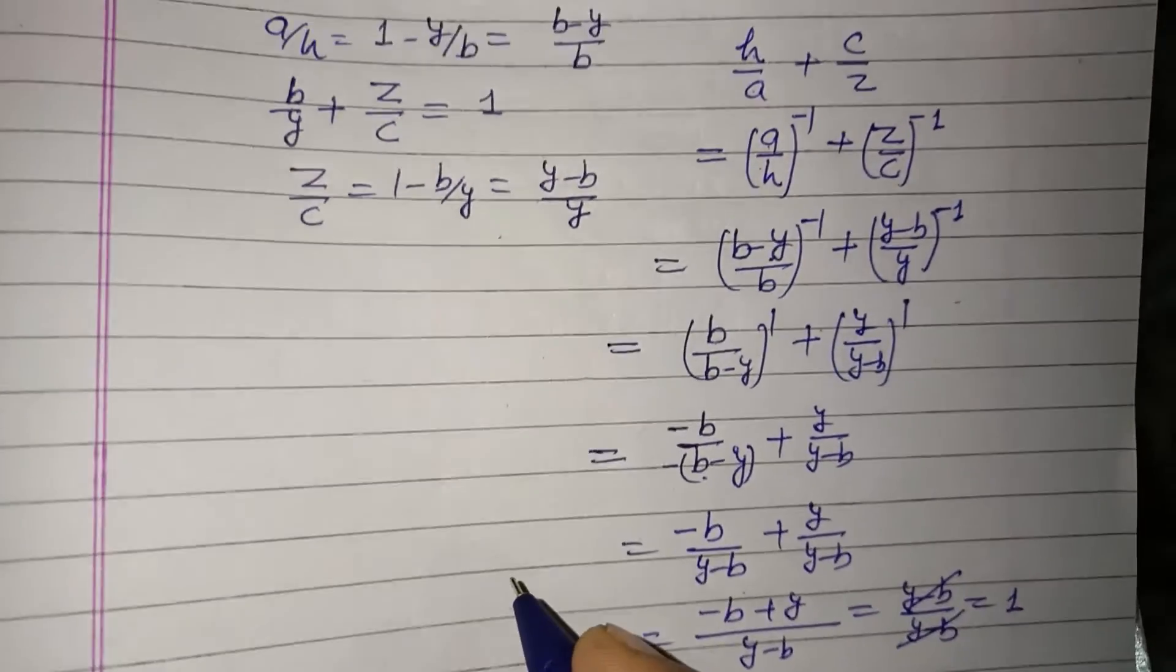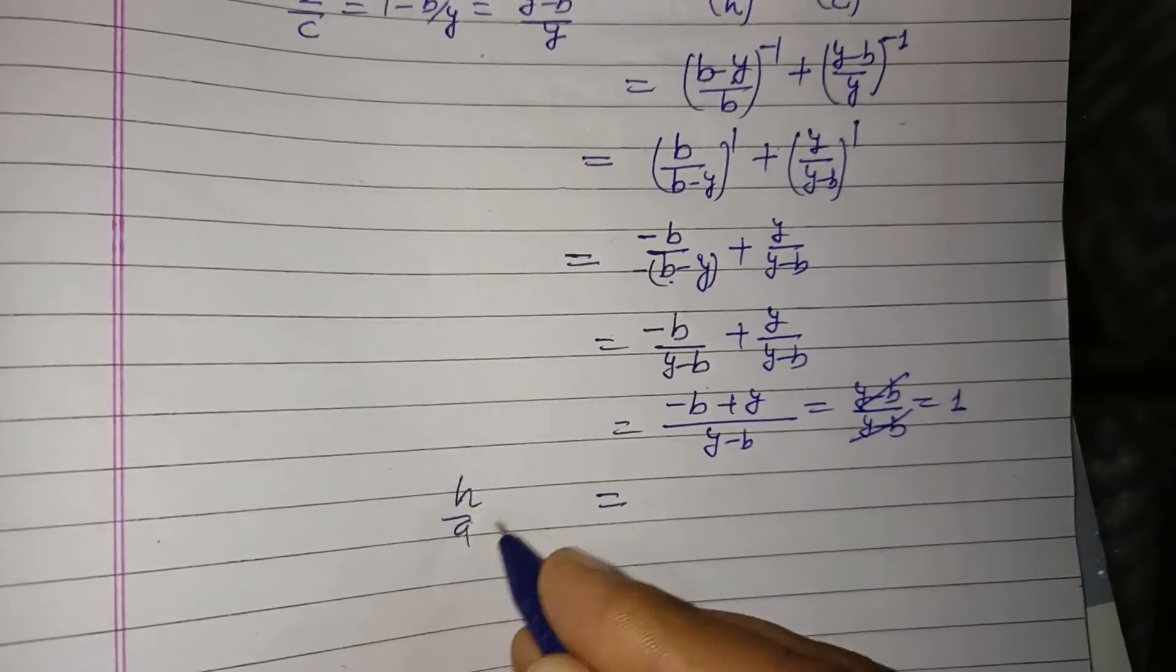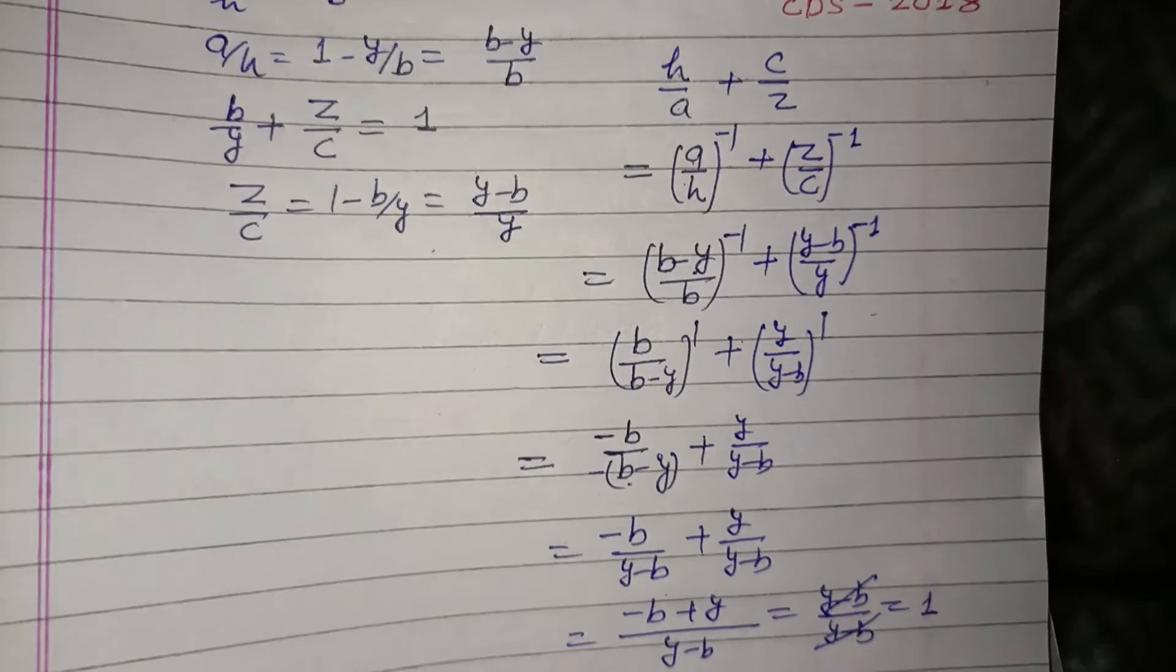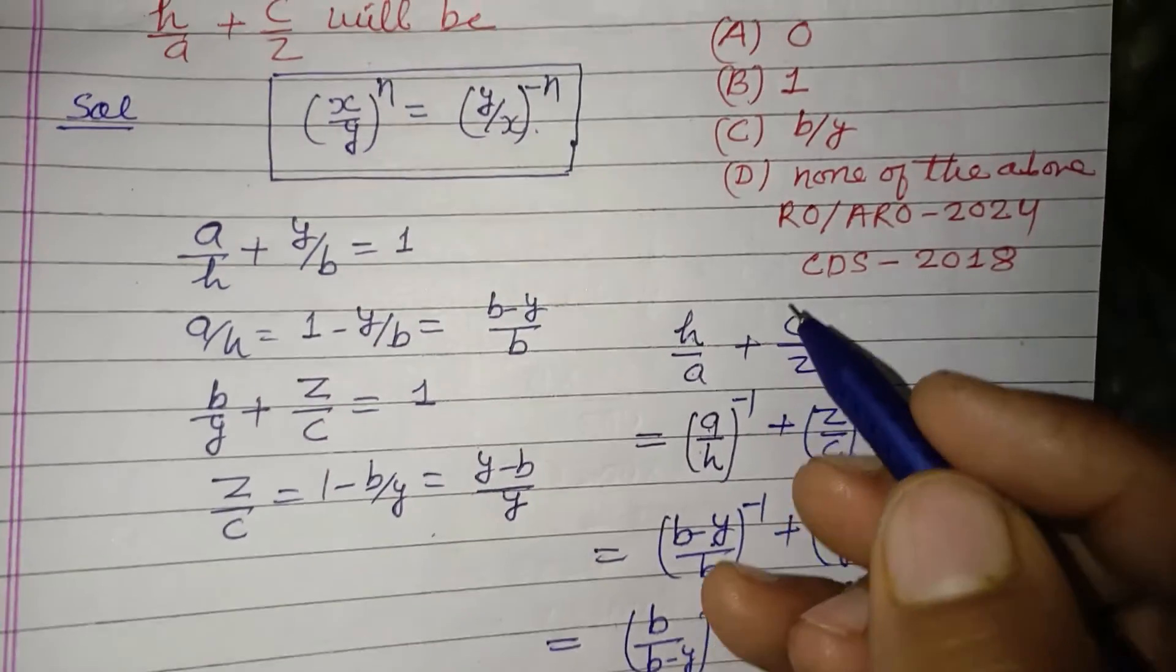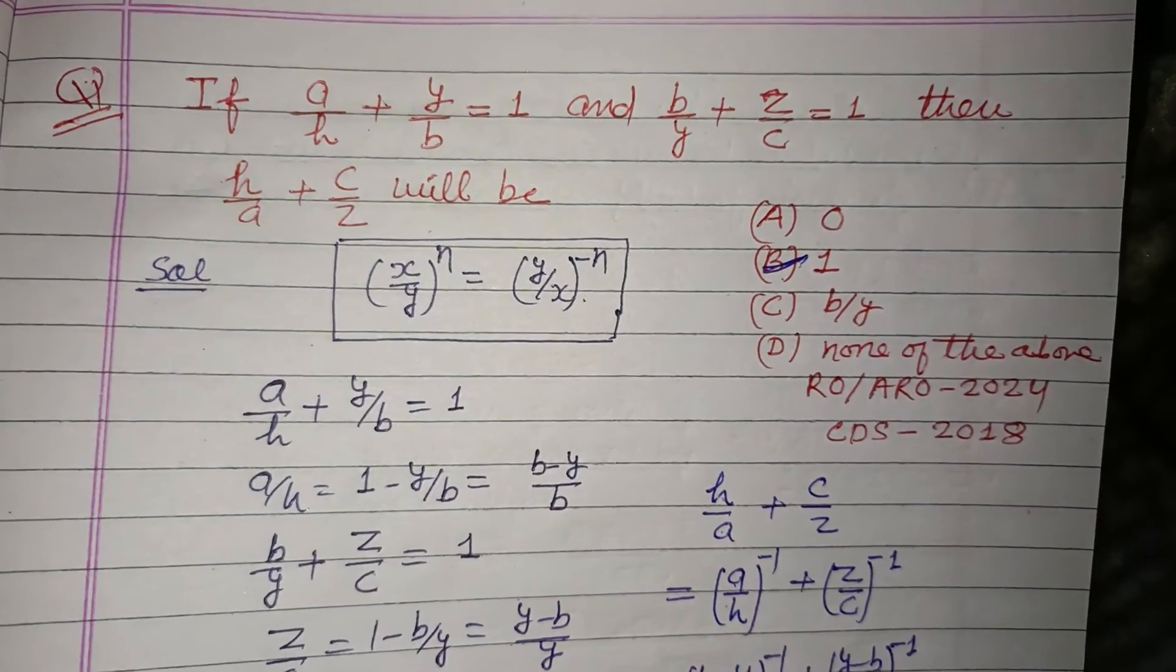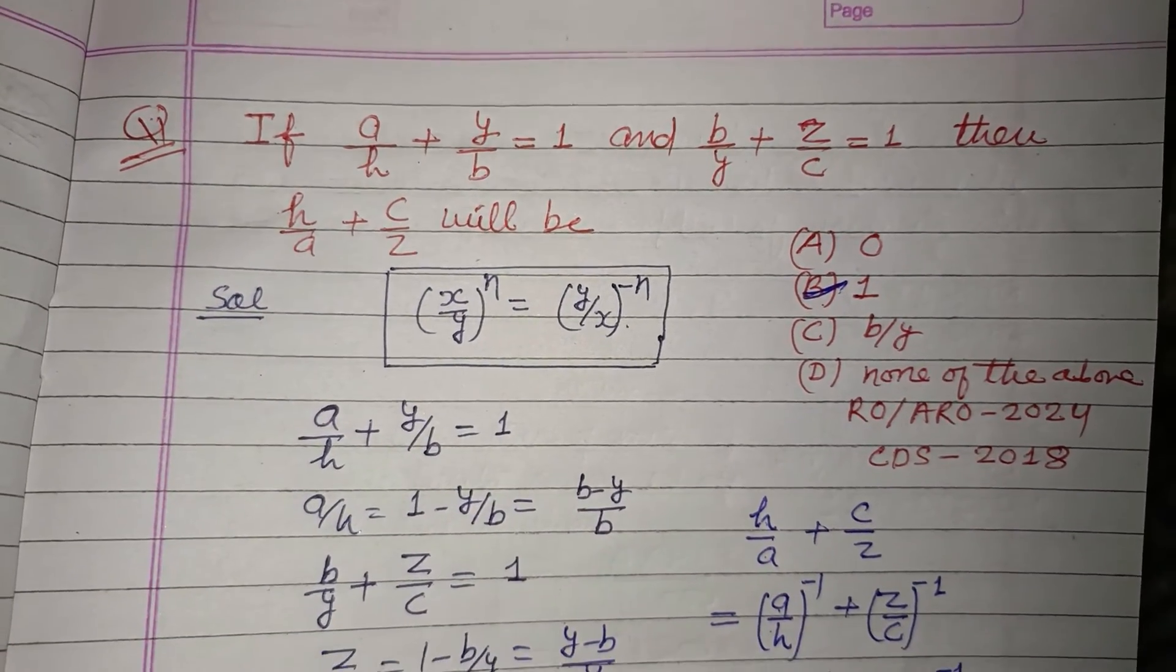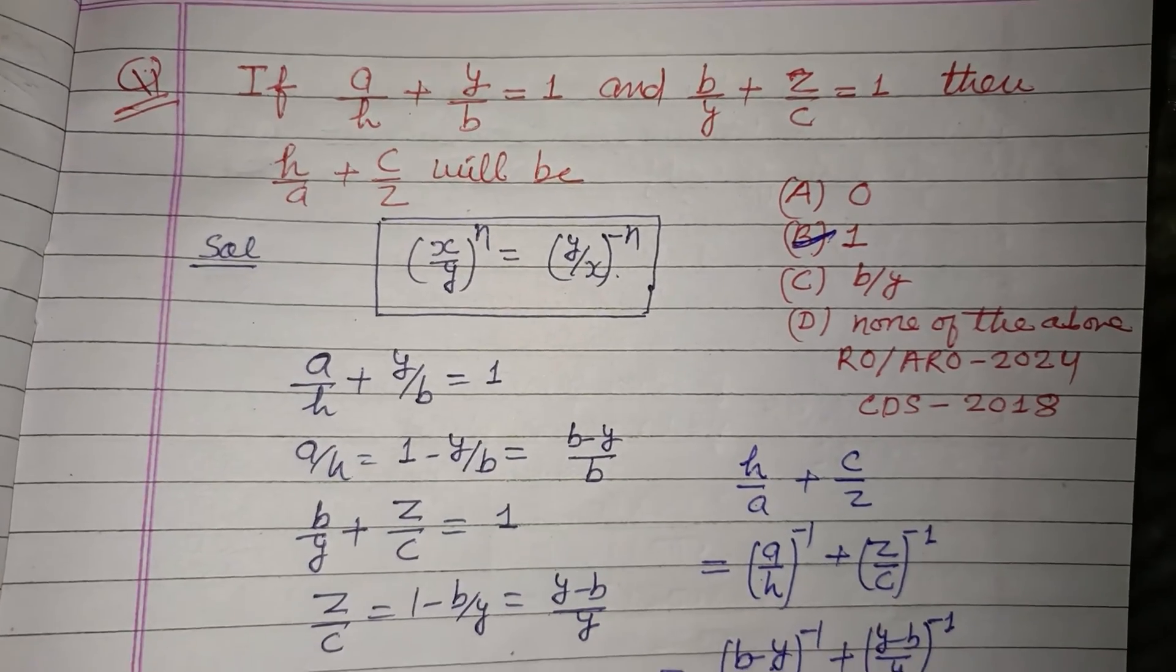Therefore, the value of h/a + c/z equals 1. So 1 is the correct answer to this question, which is found in option B. Option B is correct. I hope you got it. Please like the video, subscribe to the channel. Thanks for watching.